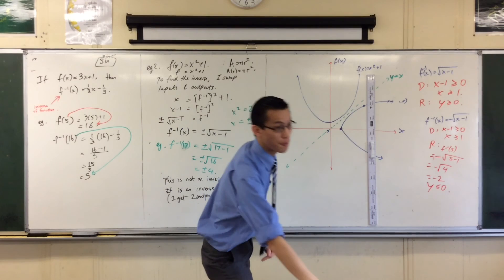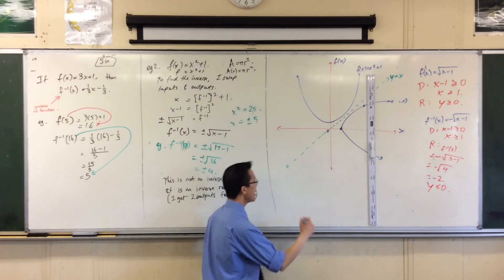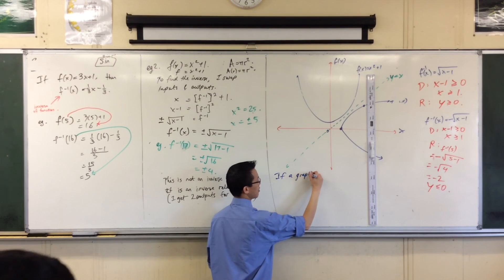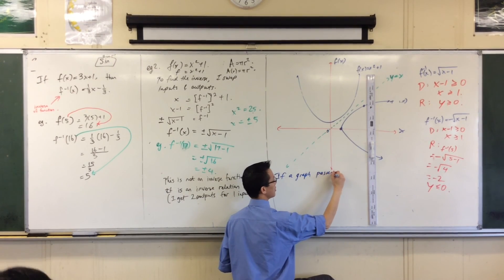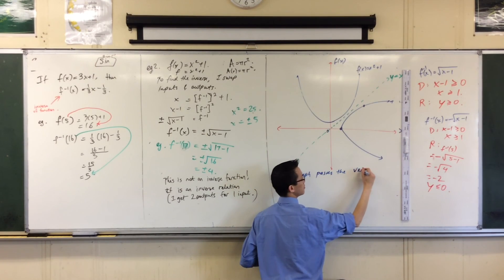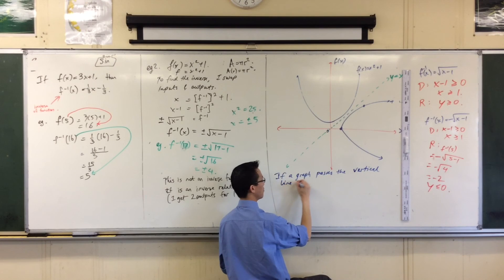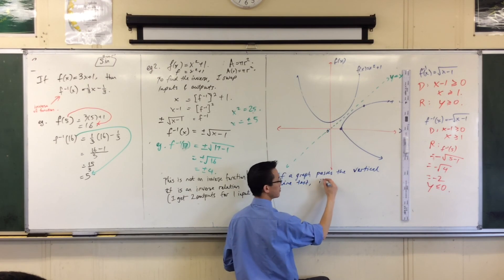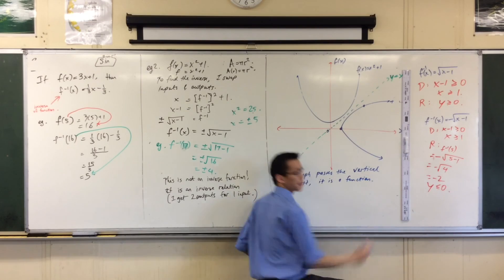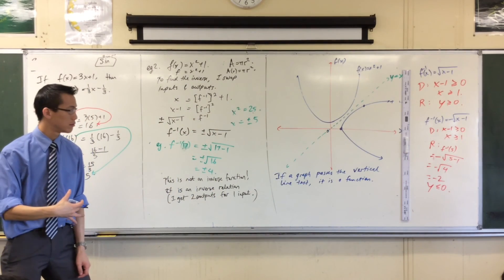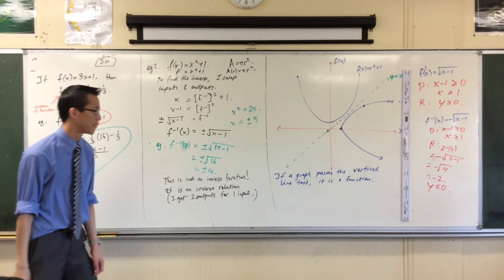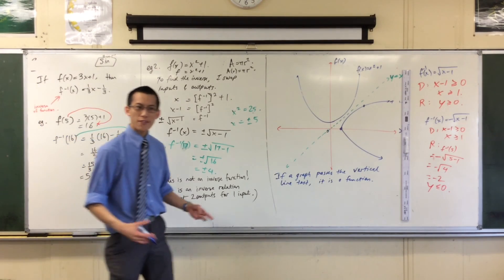So, here's my conclusion off of making that statement. If a graph passes the vertical line test, we know it's a function. That's fine. If it fails, it's not going to be a function, like a circle or something like that.